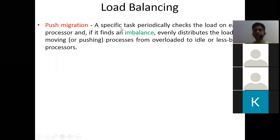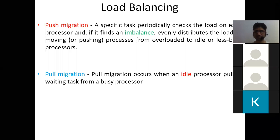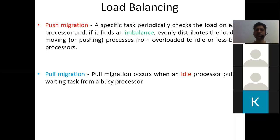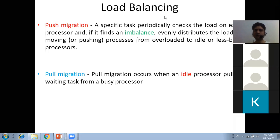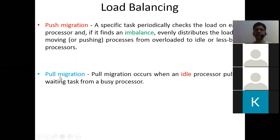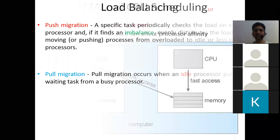The second type is pull migration. Here, an idle processor itself pulls a waiting task from a busy processor — like a clerk who is sitting idle asking people from a busy queue to come over. Pull migration occurs when an idle processor pulls a waiting task from a busy processor. Both push and pull migration are common load balancing activities seen in real-world systems.